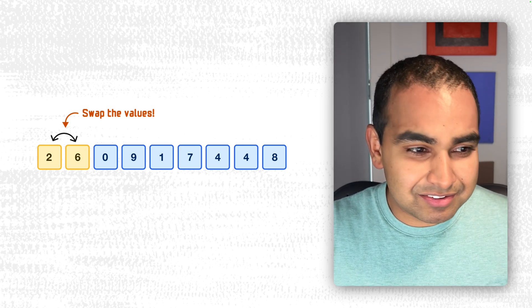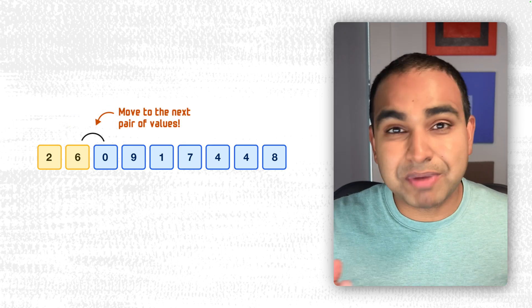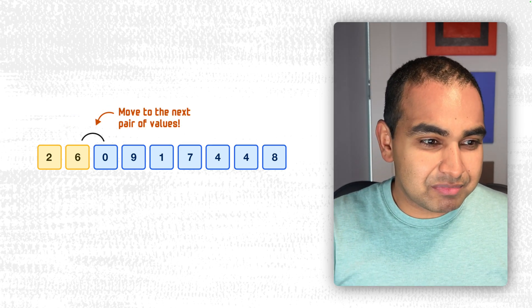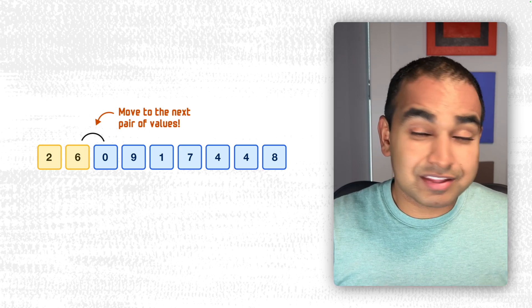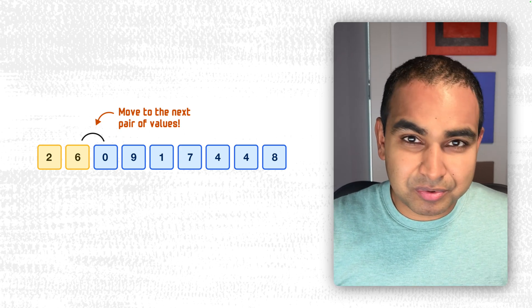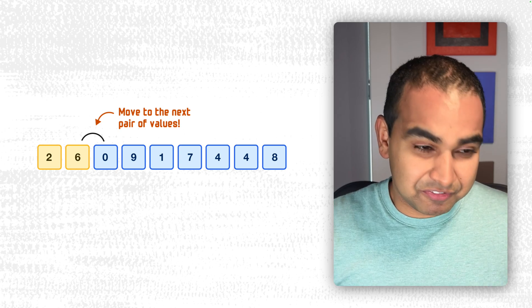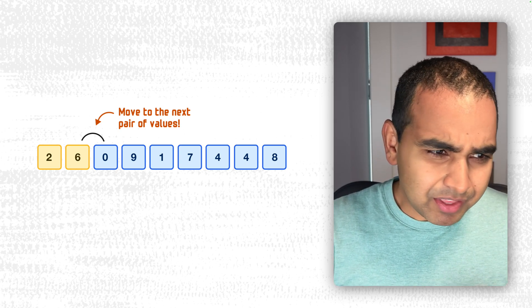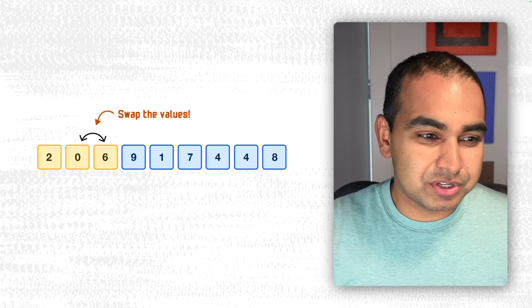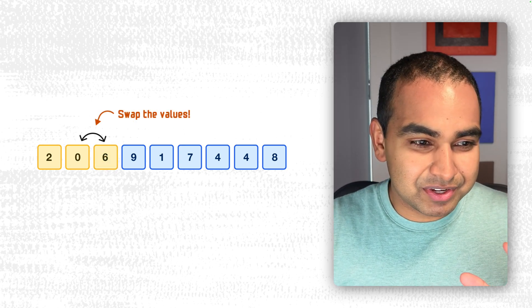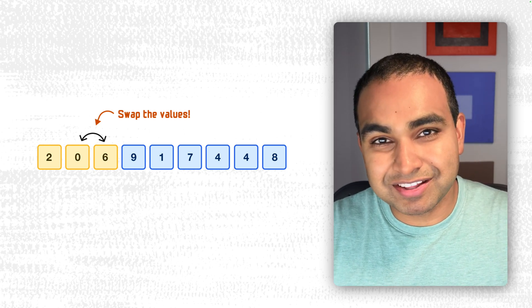So time for the next step. We move to the next pair of adjacent values. And this time it will be the 6 and the 0. And we ask ourselves the exact same question. Are these two in the sorted order where the first number is smaller than the second number? As we can see, 6 is not less than 0. So we do a swap. And so now the new arrangement is 0 and 6.